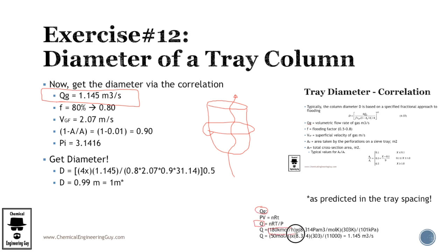you got the total moles of gas flowing. This is the ideal gas constant. Total temperature divided by the total pressure. You get this value right here. This is cubic meters per second.